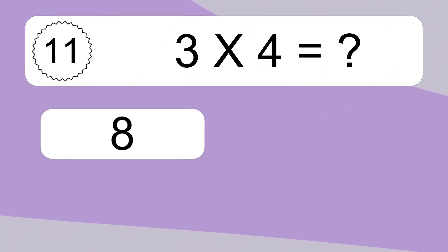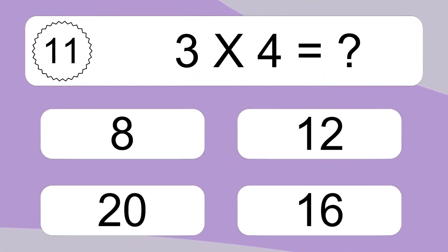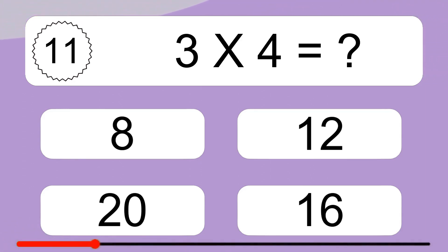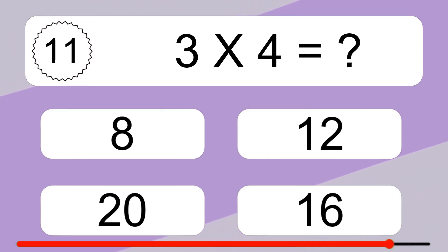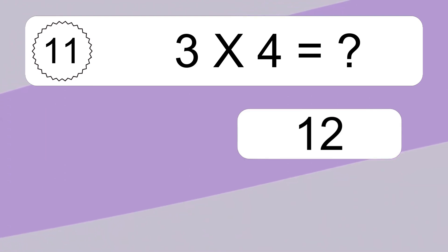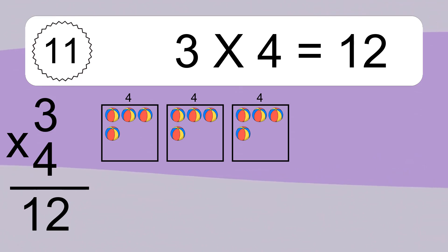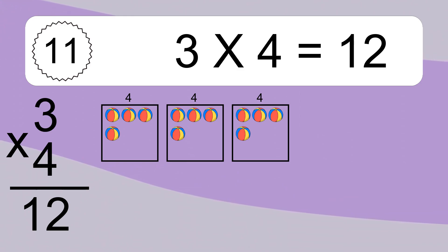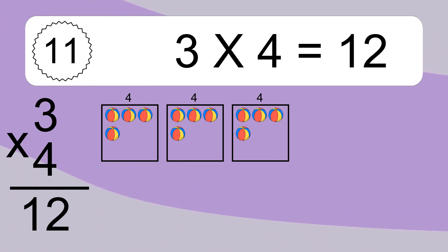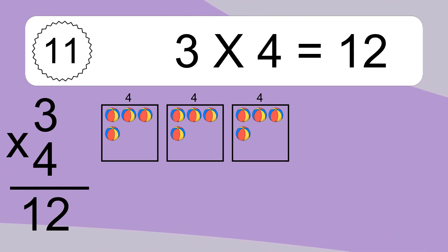3 times 4 equals what? 3 times 4 equals 12. We have 3 boxes and each box has 4 colorful balls inside. If you count all the balls in all the boxes together, you will have 3 times 4 balls. This equals 12 balls.